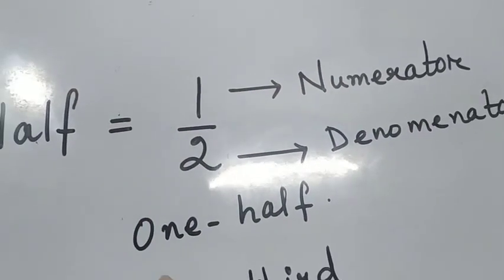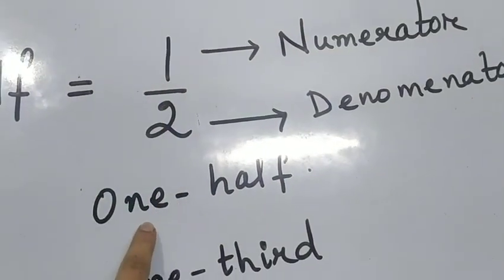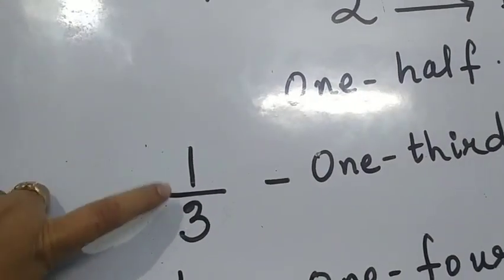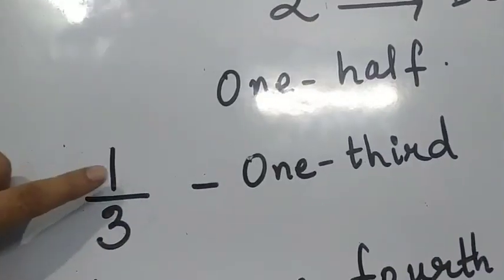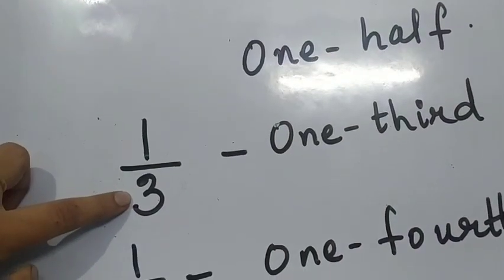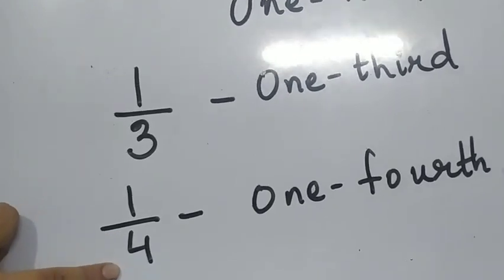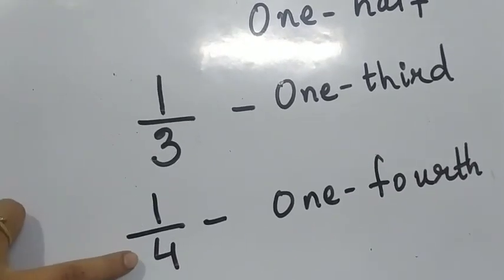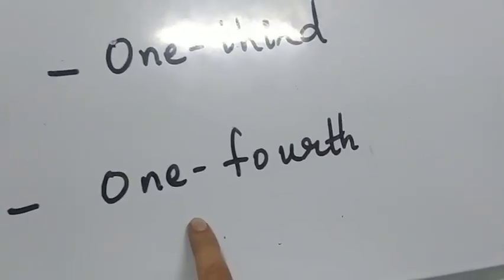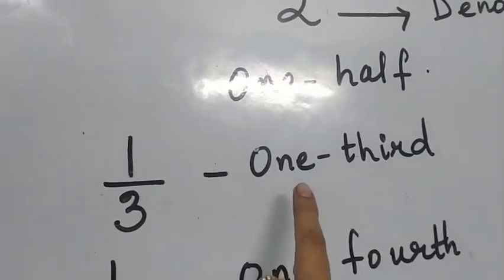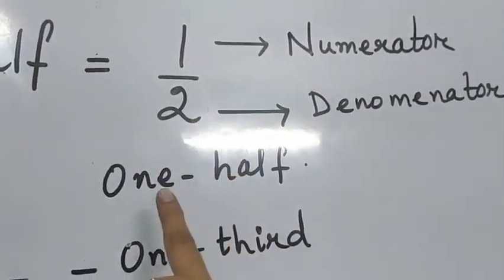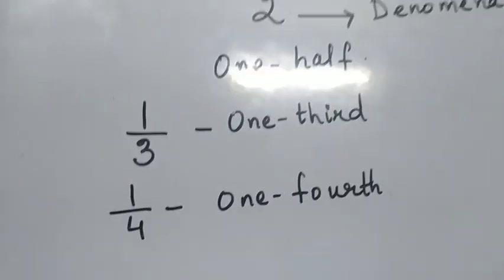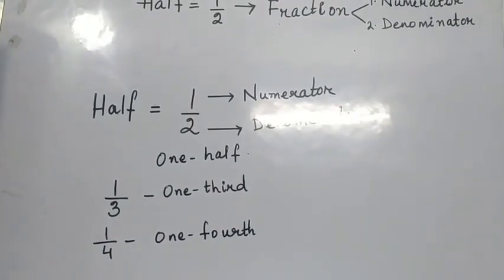This half is called one half. The other one is one by three, which is called one third. Here the one is the numerator and three is the denominator. Same with one by four — the one is the numerator and the four is the denominator, and it is called one fourth. So one by two, one by three, and one by four are all called fractions.